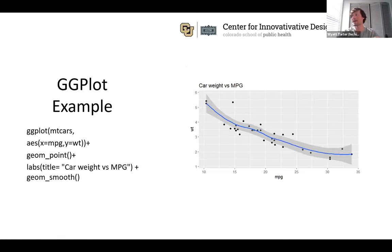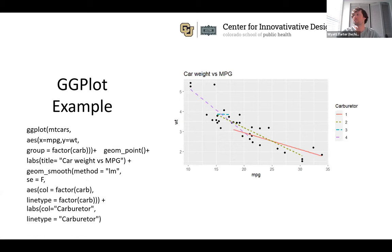Here's a scatter plot with a regression line overlay. The syntax is very similar to before — you load the data, add `geom_point()`, then add `geom_smooth()`, which overlays a regression line on your scatter plot. It's really easy and quick.